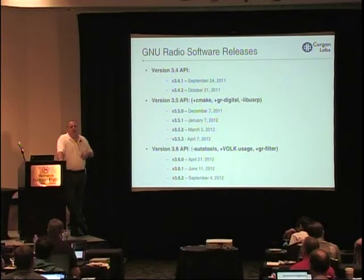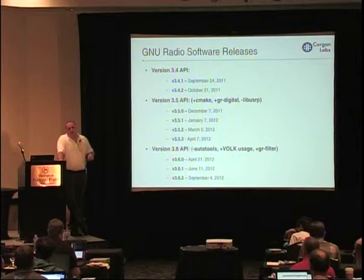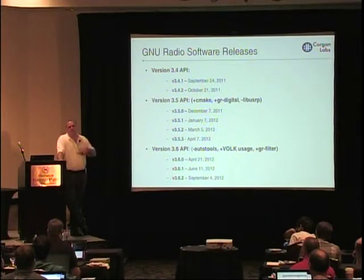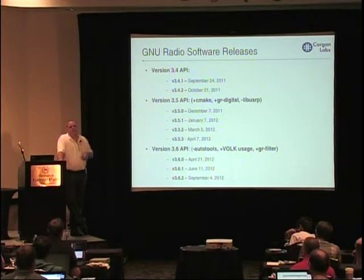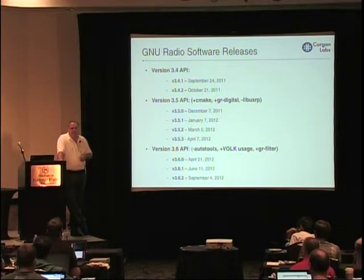On embedded systems in particular, and for security auditing, you don't want code on the system that you don't normally run. Having the ability to install minimal versions of GNU Radio is essential. We think with the 3.7 API, that'll be the case.